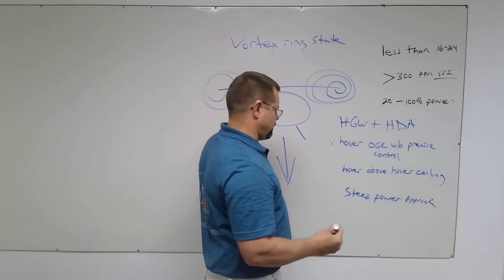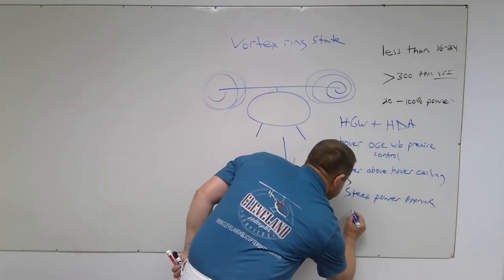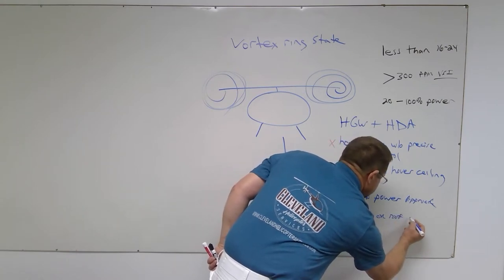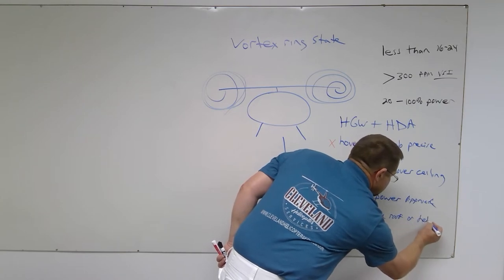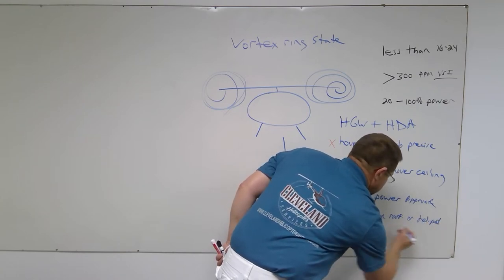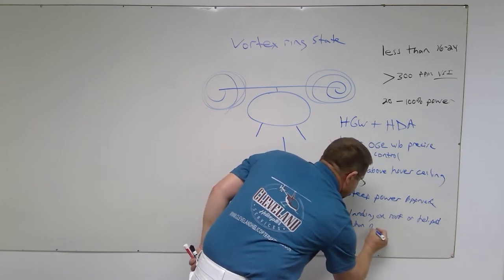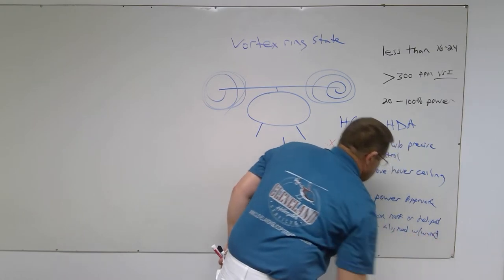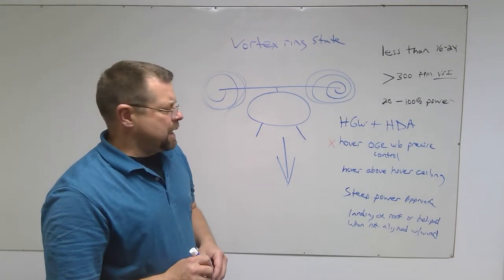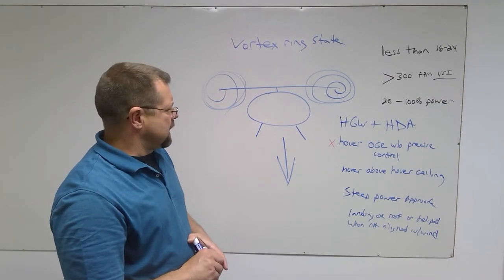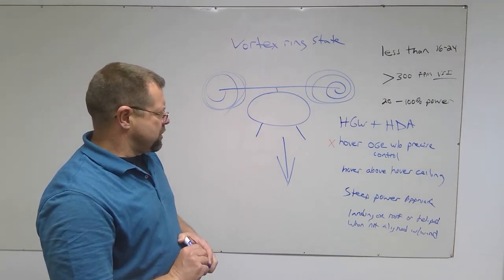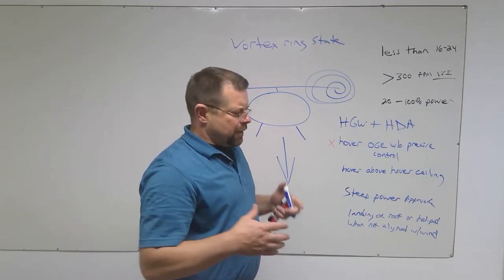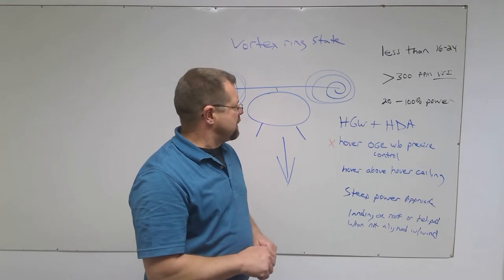The helicopter flying handbook also says landing on a rooftop or a helipad that is not aligned with the wind. In this scenario, I think I would just go around and deny the landing at that spot. Why force yourself to land on a roof or a helipad when the wind is not right and you're being forced to come in a certain way with a tailwind? That just doesn't make sense.